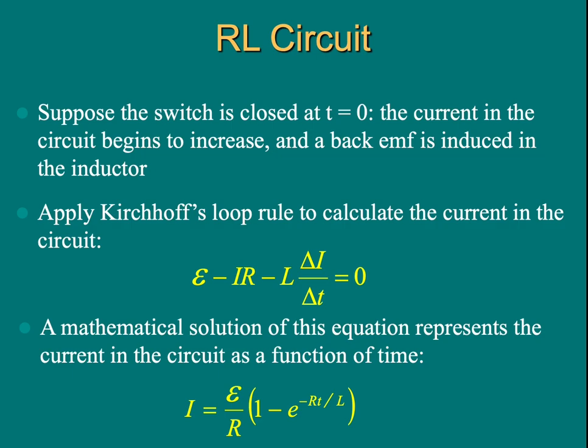Apply Kirchhoff's loop rule to calculate the current in the circuit. We find out the current as a function of time is given by this equation: current equals battery EMF divided by resistance, 1 minus exponential to the power of R times t over L.